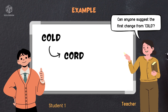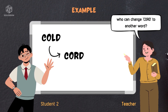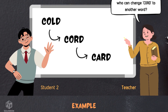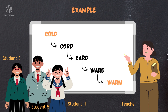Let's play a round together to see how it works. Can anyone suggest the first change from "cold"? Yes — it's "chord." I change the letter L to the letter R. Great. Now, who can change "chord" to another word? I will change the letter O to the letter A and have a new word, which is "card." Keep playing until your students reach the final word, which is "warm."